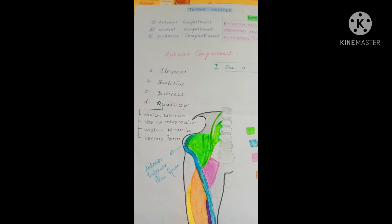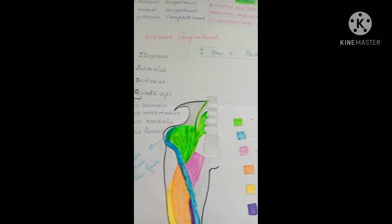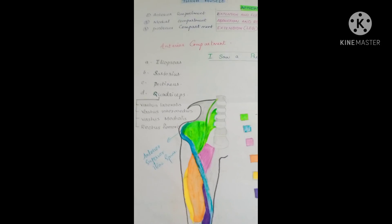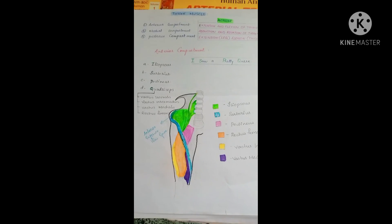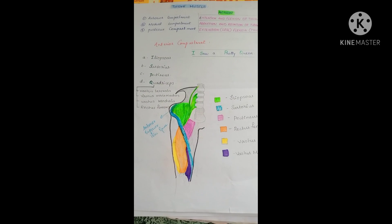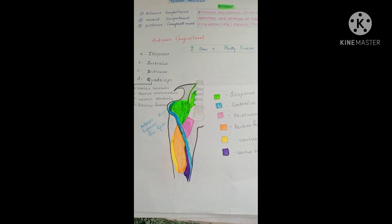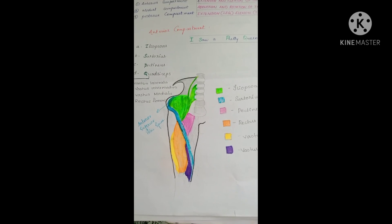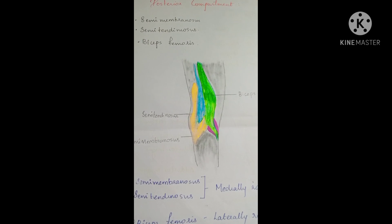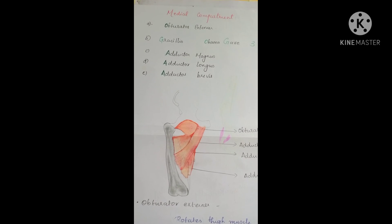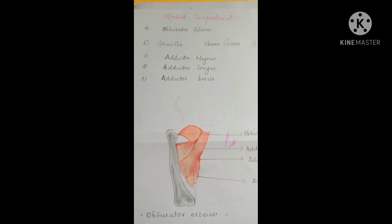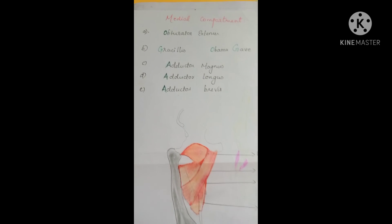In summary, the thigh muscle has three compartments. Anterior compartment: Iliopsoas, Sartorius, Pectineus, Quadriceps. Posterior compartment: Semimembranosus, Semitendinosus, Biceps Femoris. Medial compartment: Obturator Externus, Gracilis, Adductor Magnus, Adductor Longus, Adductor Brevis.